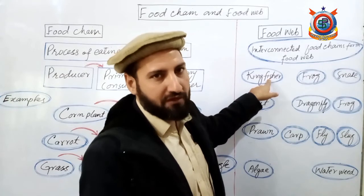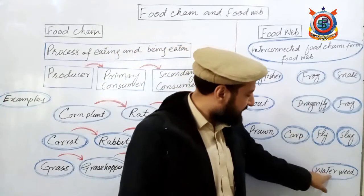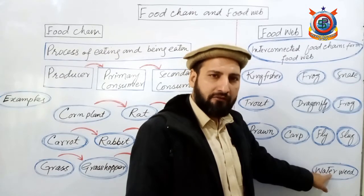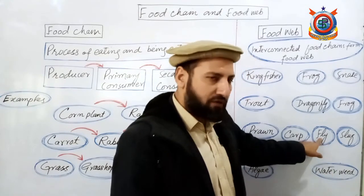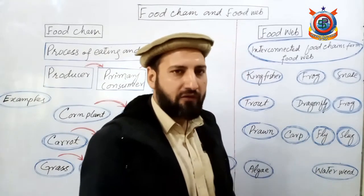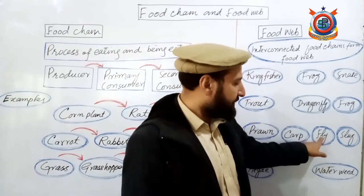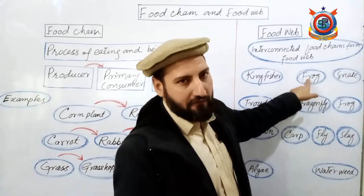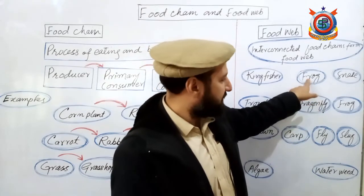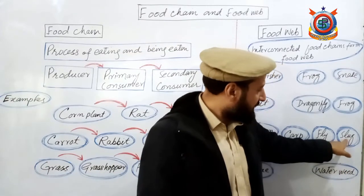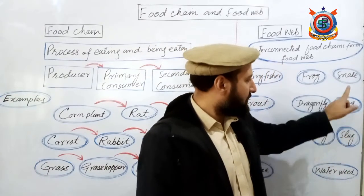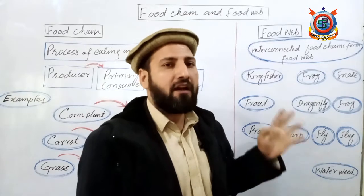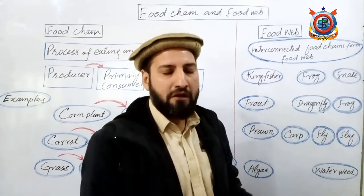Water weeds are small aquatic plants. A small fly comes and sits on them, consuming them as primary consumer. A dragonfly attacks the fly, and a frog attacks the dragonfly - forming another food chain. Similarly, slugs consume water weeds, a frog attacks the slug, and a snake attacks the frog. These are different types of food chains. From all these combined chains, we form the food web.